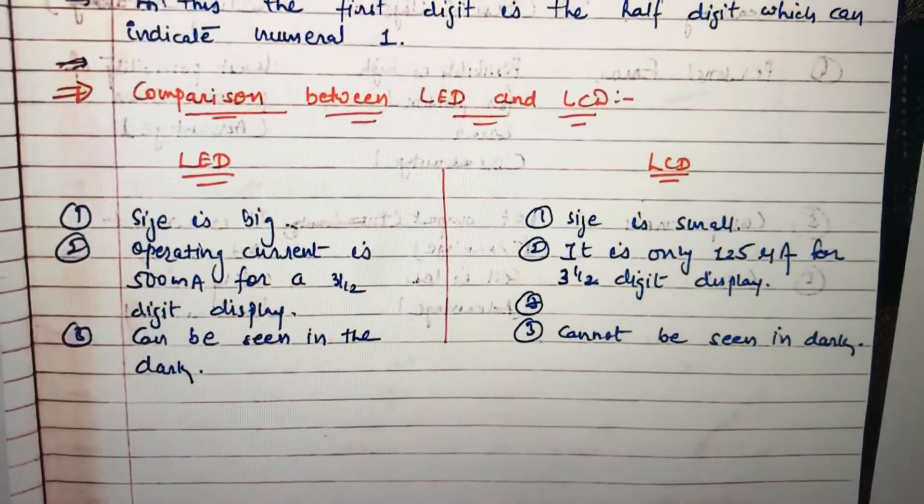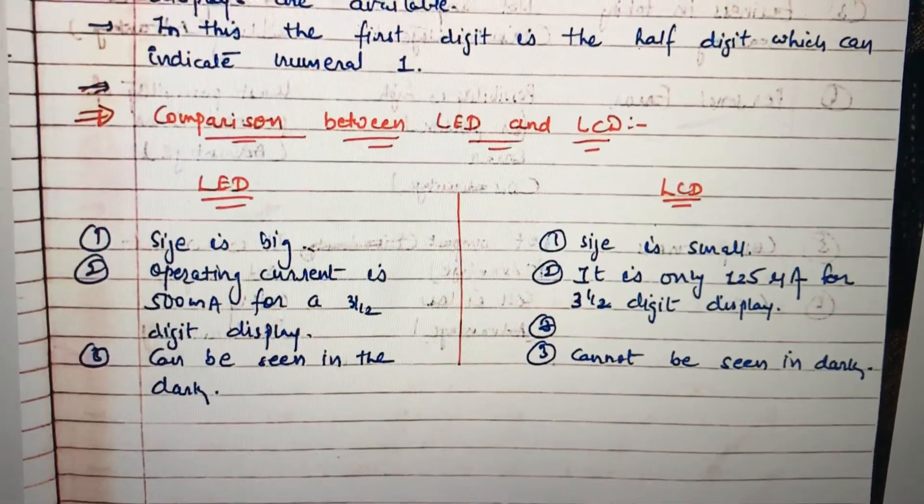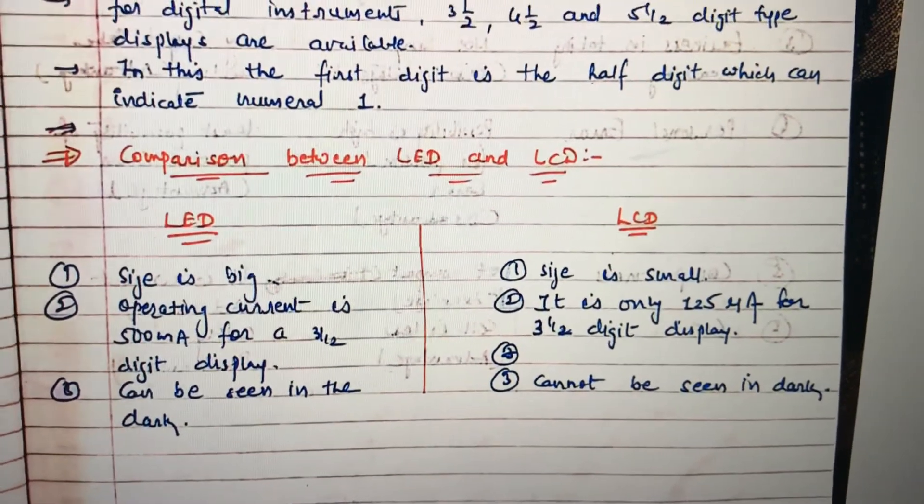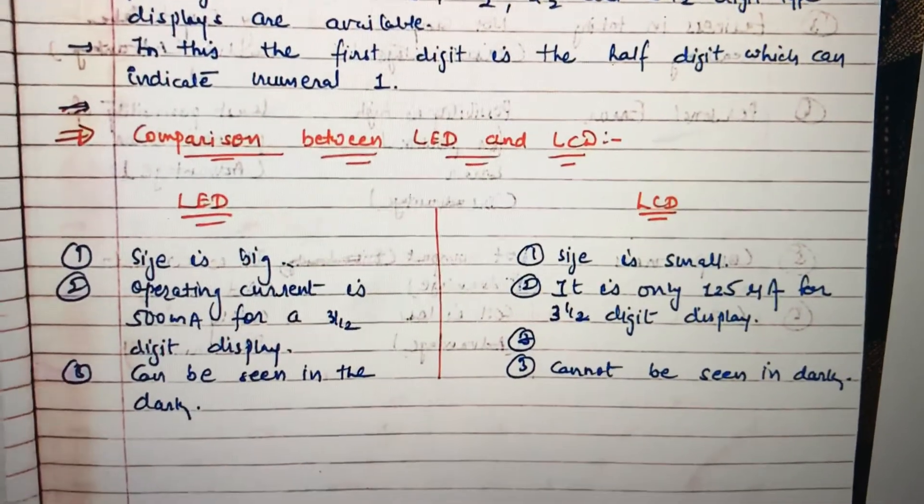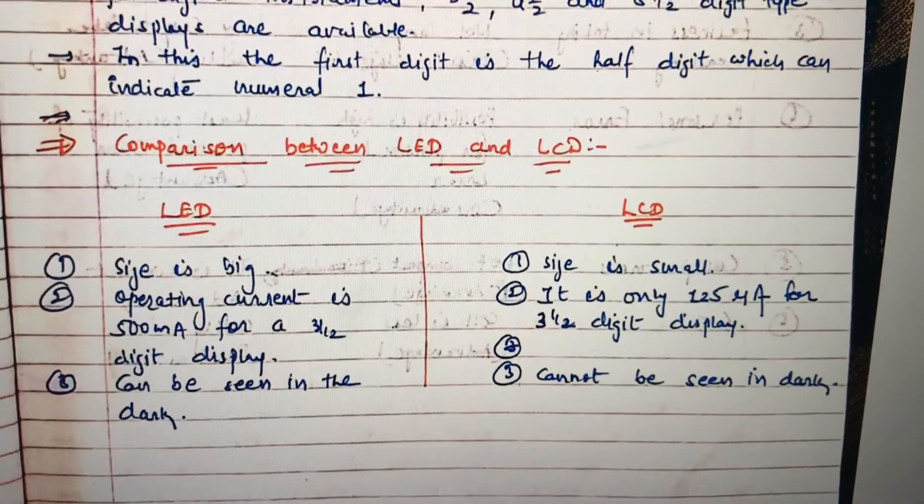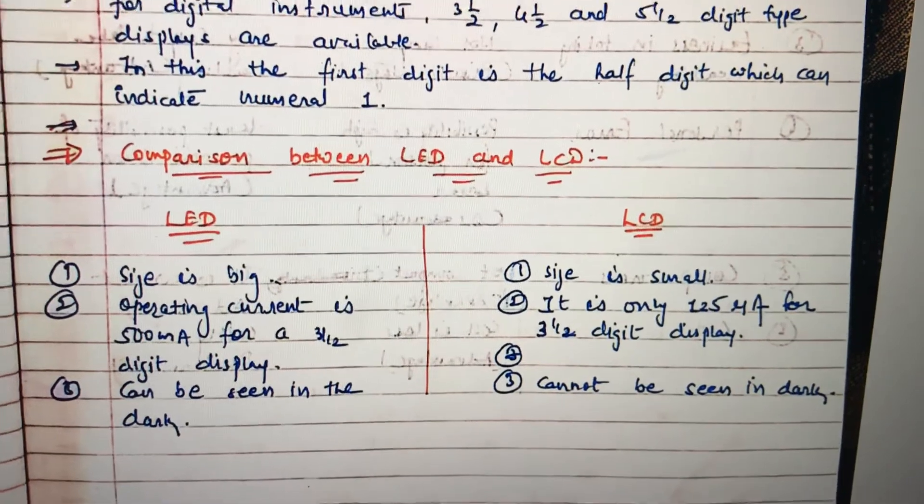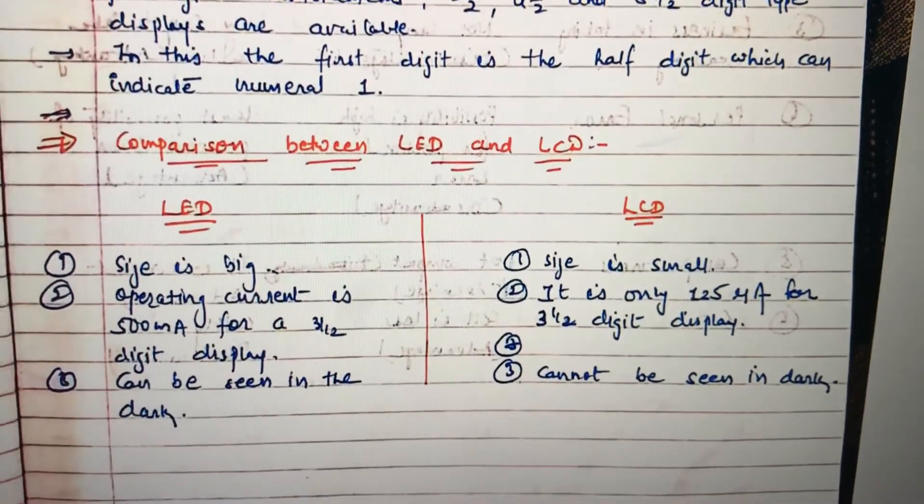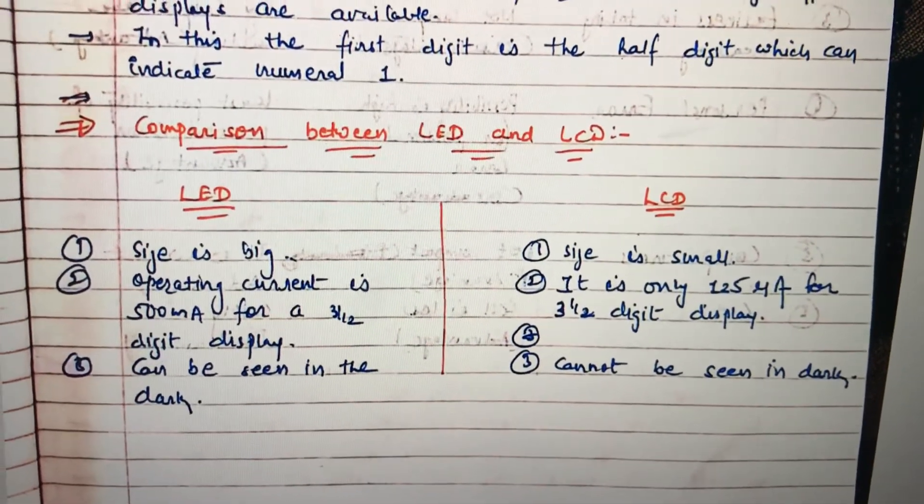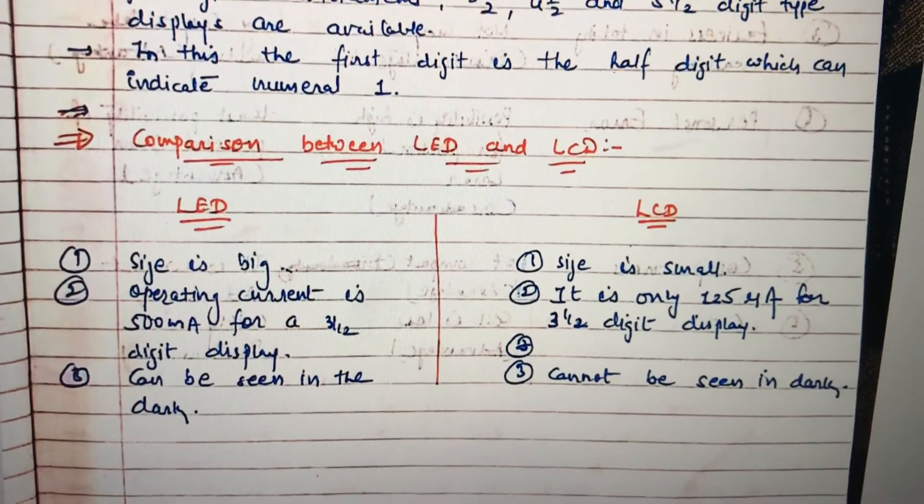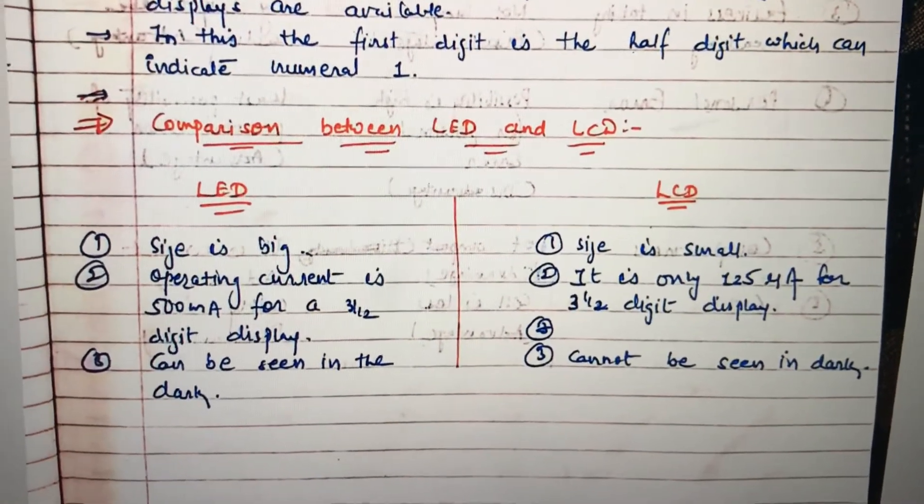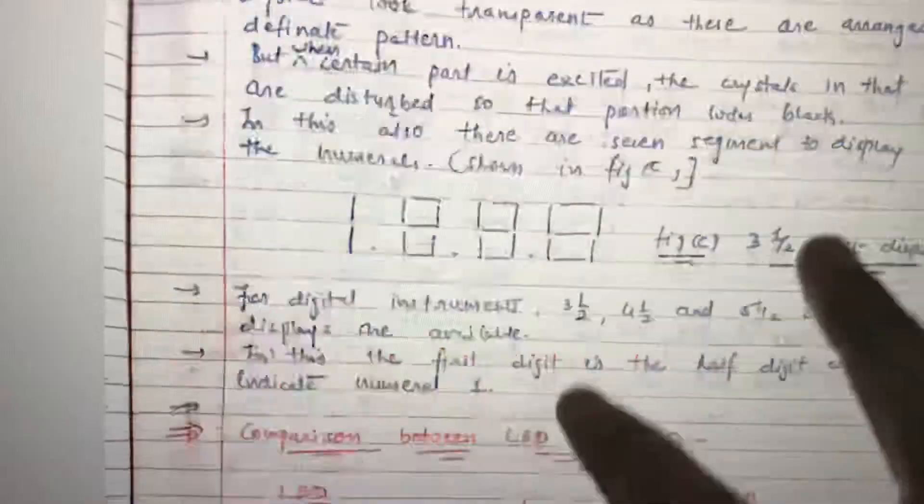LED having a size big compared to LCD, which has a small size. Second is operating current is 500 milliampere for LED, whereas it is 125 microampere for LCD. Both having the same digit display, three and a half. But the advantage for the LED display is it can be seen in the dark, but LCD cannot be seen in the dark.